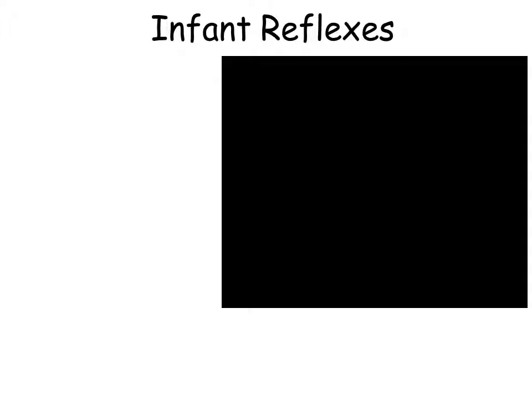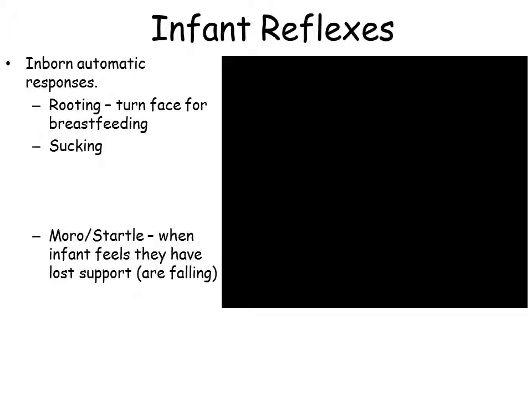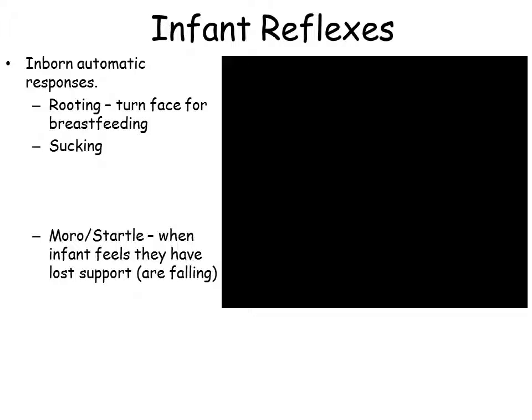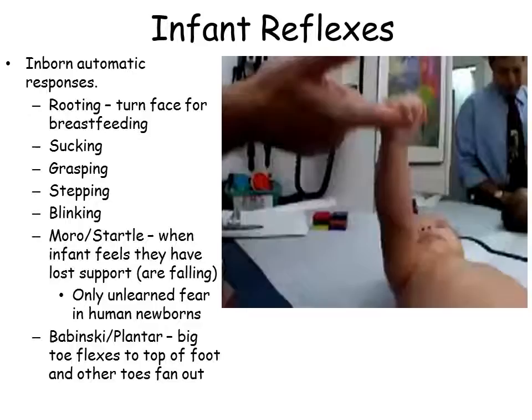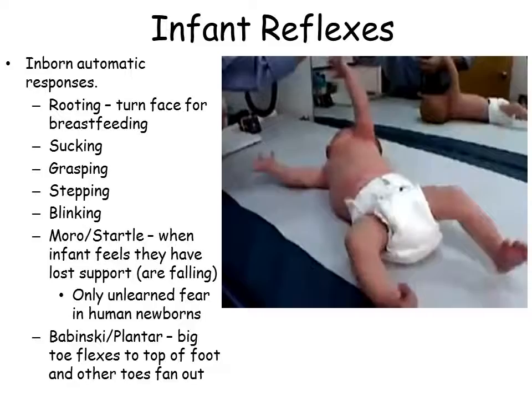Infant reflexes are automatic inborn responses. The rooting reflex: rub a baby's cheek and their head turns that direction — for breastfeeding purposes. Sucking and grasping are also reflexes; babies grasp your finger and hold on for dear life. Stepping: when held upright, babies make stepping movements. Blinking, the palmar grasp, the Moro or startle reflex, and the Babinski are all inborn automatic responses — nature's toolkit to help an infant adapt to the world.